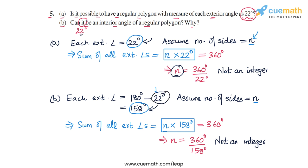So in both cases, the answer is no. For part A, we cannot have each exterior angle equal to 22 degrees. Similarly, for part B, we cannot have 22 degrees as an interior angle of a regular polygon either.